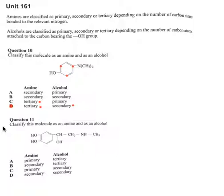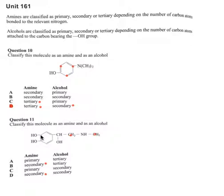Alright for question 11, classify this molecule as an amine and as an alcohol. For the amine we look at this nitrogen — you can see it's connected to two carbons so it's secondary, so either B or D. We can look at any hydroxyl group here, so let's just take this one for example — this hydroxyl group is connected to a carbon which is connected to two other carbons, so therefore that's a secondary alcohol.